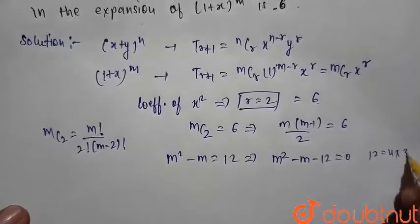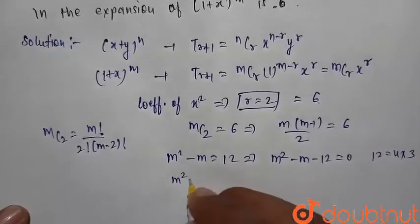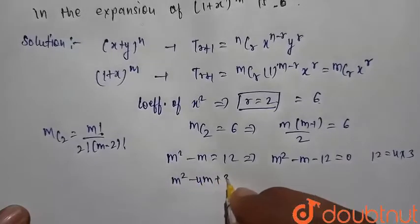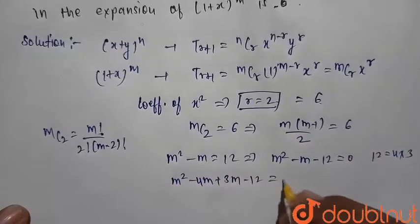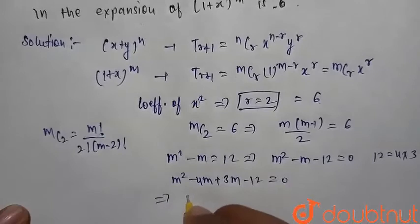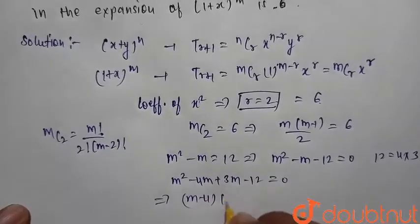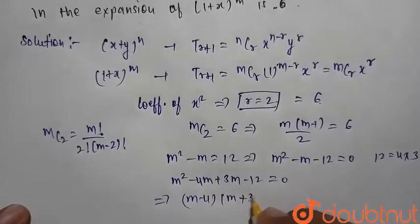12 can be factored as 4 into 3. So we can write here m square minus 4m plus 3m minus 12 is equal to 0. From here we can factorize this: m minus 4 into m plus 3 is equal to 0.